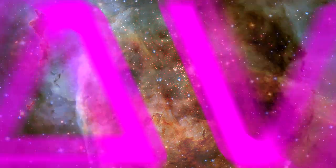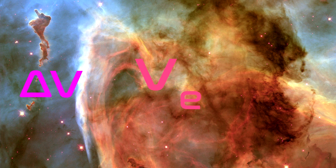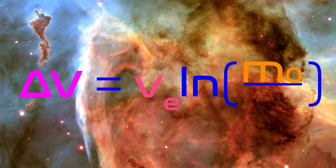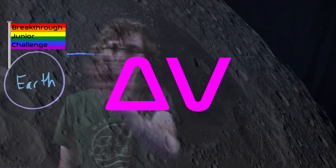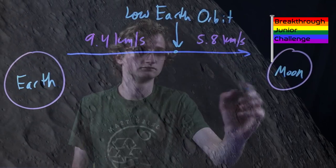This equation yields delta V, or change in velocity, given a set speed VE of the exhaust particles, and a starting mass of the rocket M0, and an ending mass of the rocket M1 without fuel. Delta V will dictate where our rocket can travel to based on the amount of fuel we have and the efficiency of our engines.